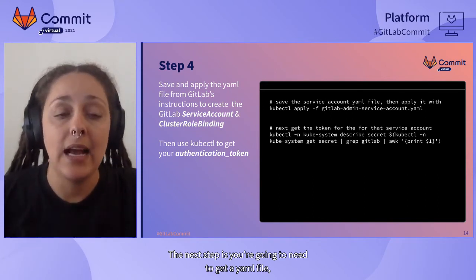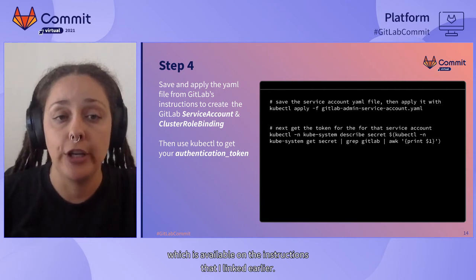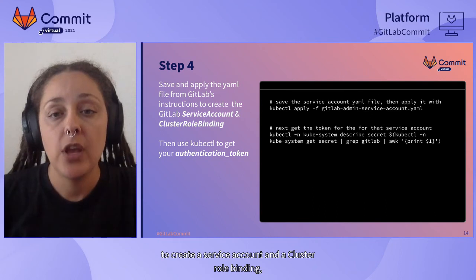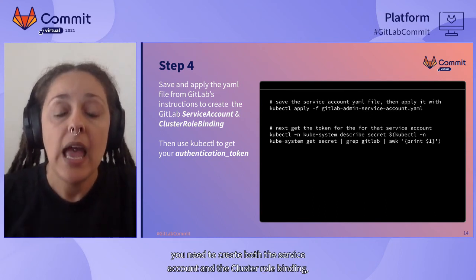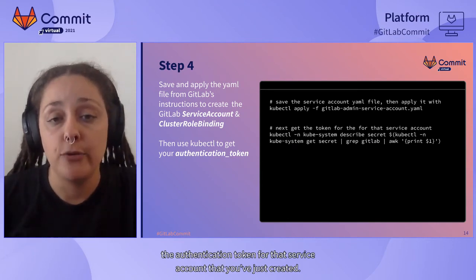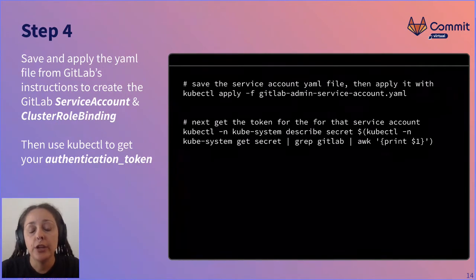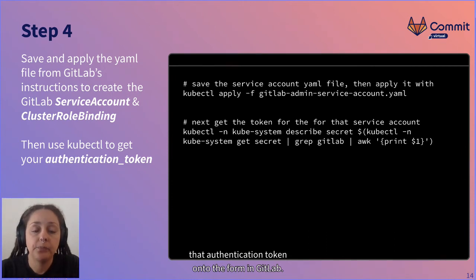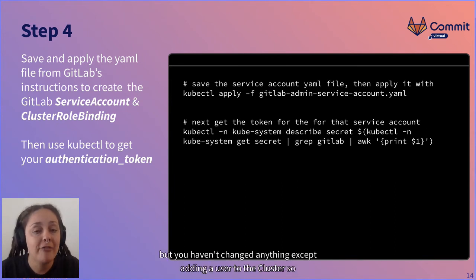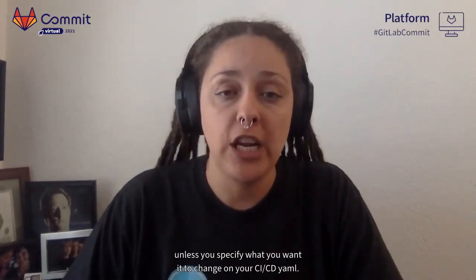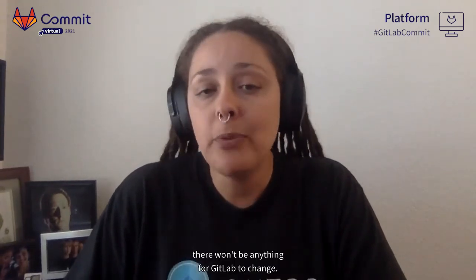The next step is to get a YAML file available on the instructions I linked earlier. This YAML file contains the Kubernetes code for the cluster to create a service account and a cluster role binding. You need to create both the service account and the cluster role binding, and then get the authentication token for that service account. You'll save and apply the YAML file to create the account, then run the command shown to get the token and drop that authentication token onto the form in GitLab. At this point, you've modified your Kubernetes cluster only by adding a user so GitLab can connect. GitLab will not change anything unless you specify it in your CI/CD YAML.